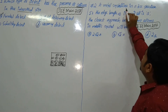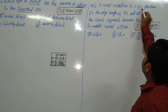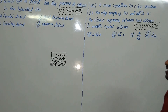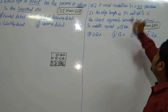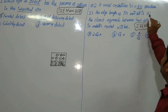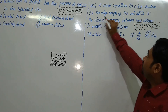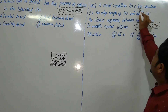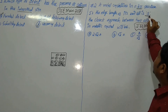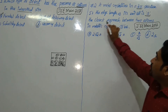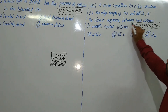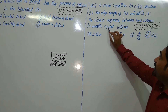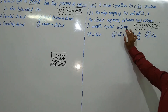Now the next question: a metal crystallizes in FCC (face-centered cubic) structure. They have given a metal that crystallizes in FCC structure. If the edge length of its unit cell is A, what is the closest approach between two atoms in the metallic crystal system?